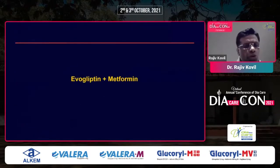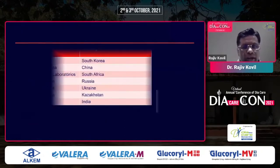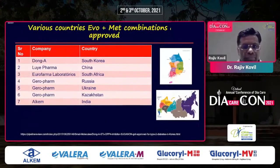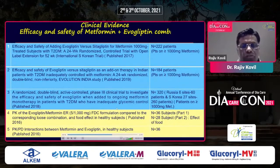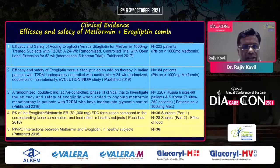Looking at data on evogliptin plus metformin, it has been approved in seven countries of the world, with India being the latest. We will look at a few studies — including head-on studies and Indian studies — to put forward the concept of evogliptin plus metformin.